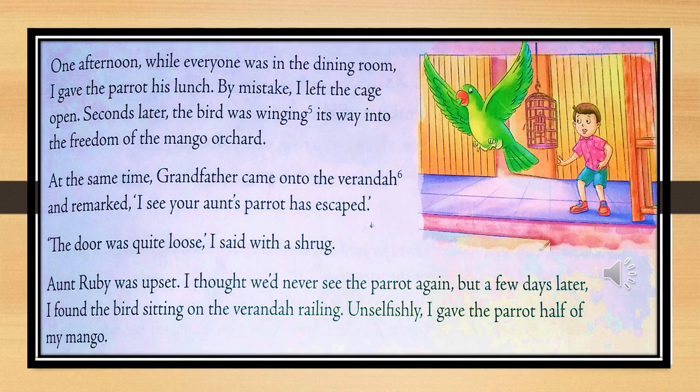After a few days, the narrator saw the bird sitting on the veranda railing. Because he liked the parrot and the parrot liked him, he unselfishly and without thinking gave the parrot half of his mango slice, because the parrot used to like eating mango.